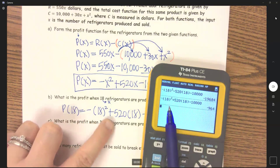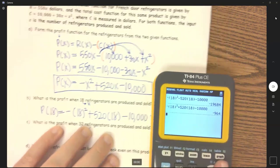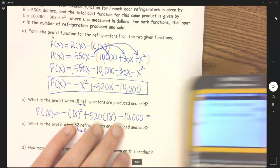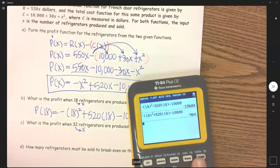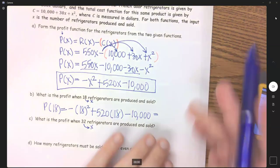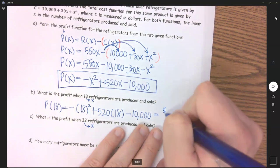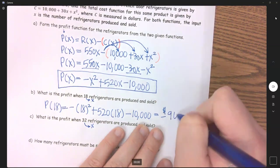So negative 18 squared plus 520 times 18 minus 10,000. We get negative 964, and we're talking about money, so negative 964.